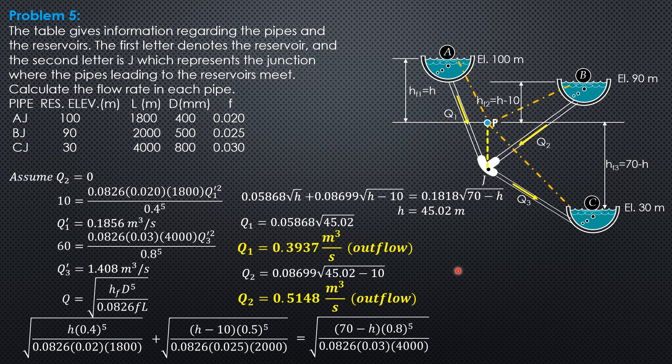And finally, for Q3, which is the only inflow, 0.1818 square root of 70 minus 45.02. So 0.9086 cubic meter per second.